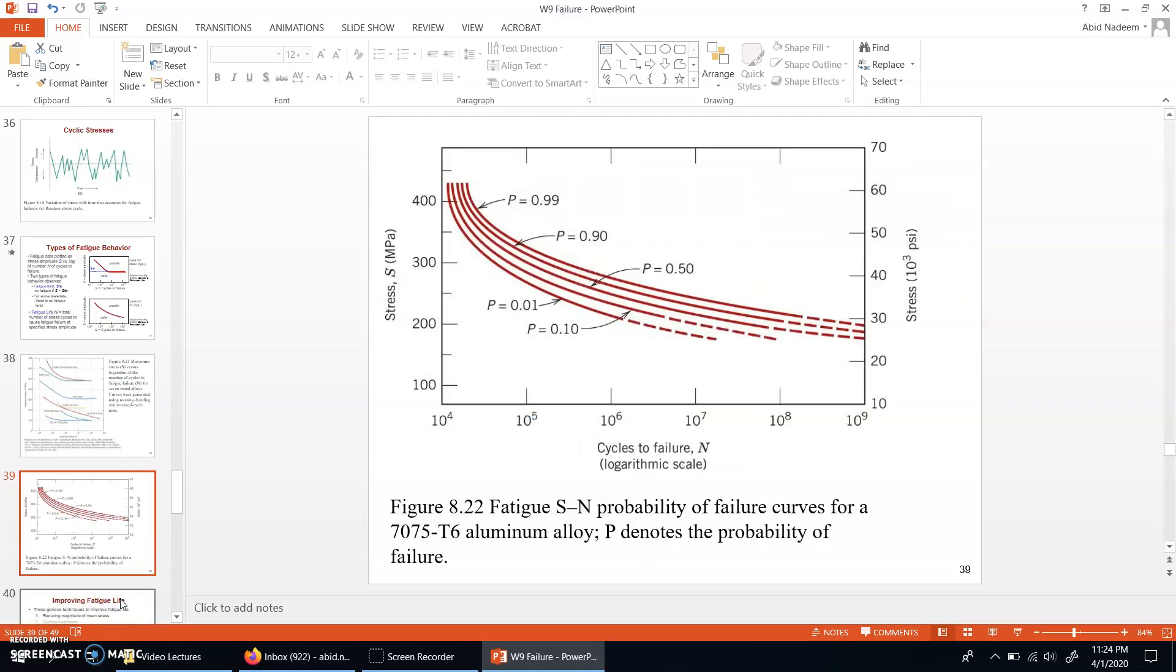This chart is about the stress versus the number of cycles failure. Here you can see that this is only showing for one metal, aluminum. You can see that probability values are shown over here: 99% probability, 90% probability, 50% and even 1% probability. Why do we need to show these probabilities? The thing is that this stress versus the number of cycles data is highly scattered data, which means that even with very careful control of the experiments, you may not get values for the stress versus the number of cycles to failure in a very consistent way. The data may show quite a lot of variations.